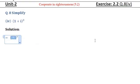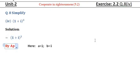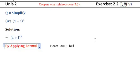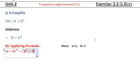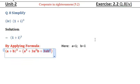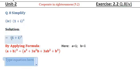We use the formula (a + b) whole cube. As we know very well, (a + b)³ equals a³ plus 3a²b plus 3ab² plus b³.